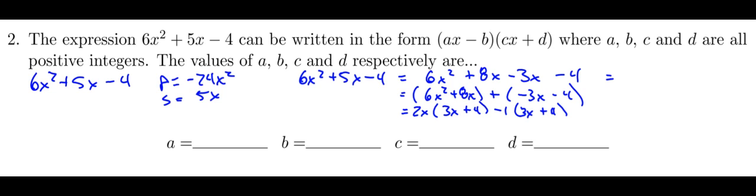And so that common factor here now is this 3x + 4. And I've got this 2x - 1 left over as the coefficients of those binomials there.